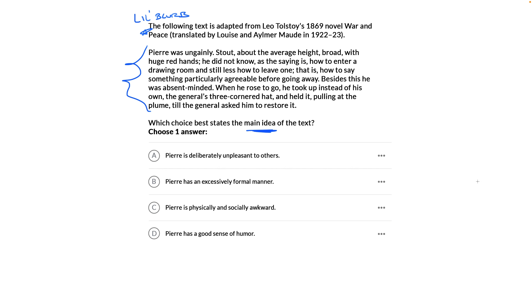First step, cover the choices. Next step, summarize the text. So the following text is adapted from Leo Tolstoy's 1869 novel, War and Peace, translated by Louise and Elmer Maud in 1922-23.